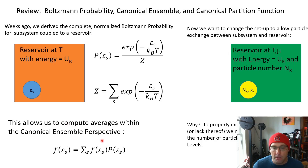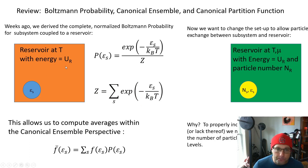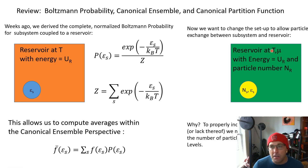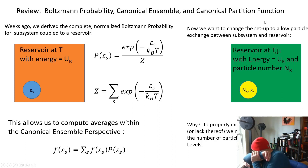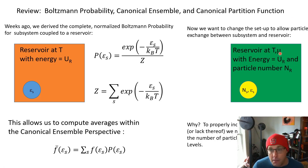You can compute averages using that probability, and in fact we found that you can do all of thermodynamics just from knowing the canonical partition function. We need to modify this if we want to keep careful track of particle numbers for Pauli exclusion purposes. To do that, we need to modify our concept of the reservoir to have not just a temperature, but also a chemical potential.